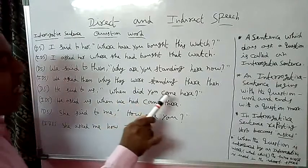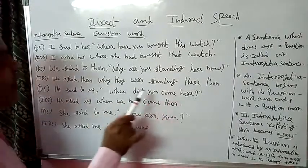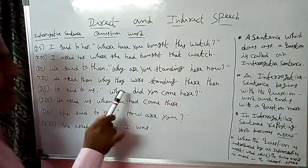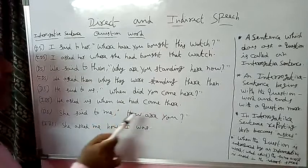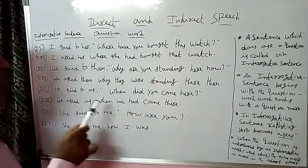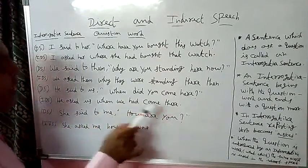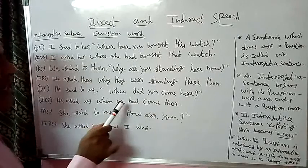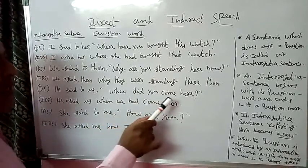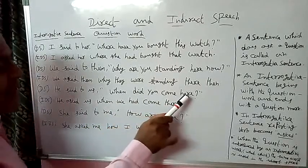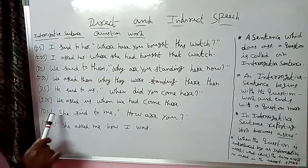When did you come here? This sentence is in simple past tense, so we must change to past perfect tense. Past perfect tense rule: Subject + had + verb 3 + object. Subject 'we' + had + verb 3 'come'. 'Here' becomes 'there' in indirect speech.